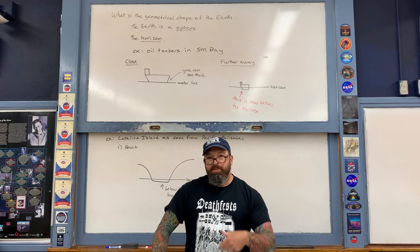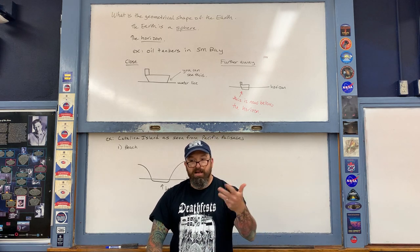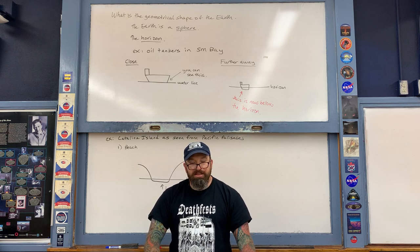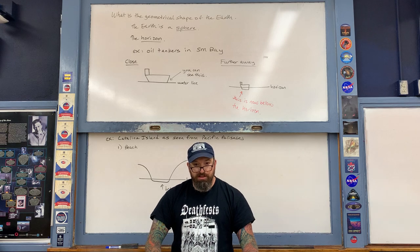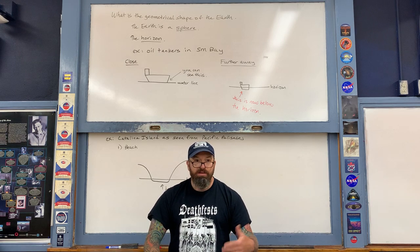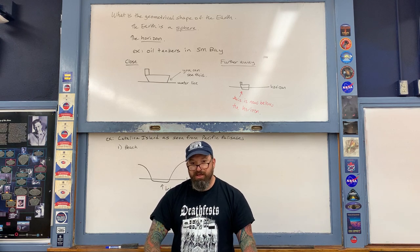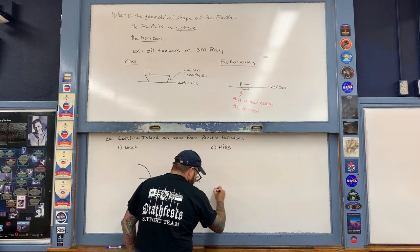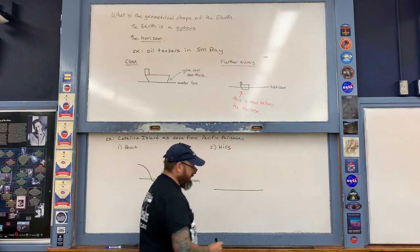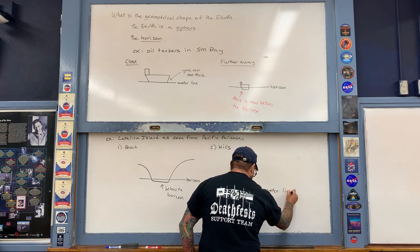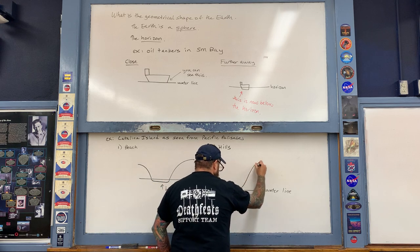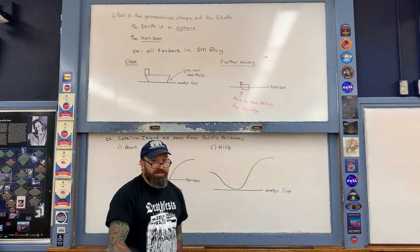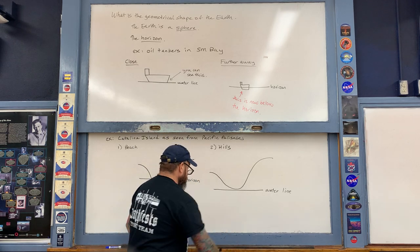Now, let's say you go up into the hills here in Pacific Palisades behind the school. At the top of those hills you're several hundred feet above sea level. When you look out towards Catalina Island again, you'll be able to see the entire island. The distance to the horizon depends upon your elevation above the surface of the Earth. From the hills, the line in the diagram is now the waterline, not the horizon — you can now see the isthmus, which is above the horizon.